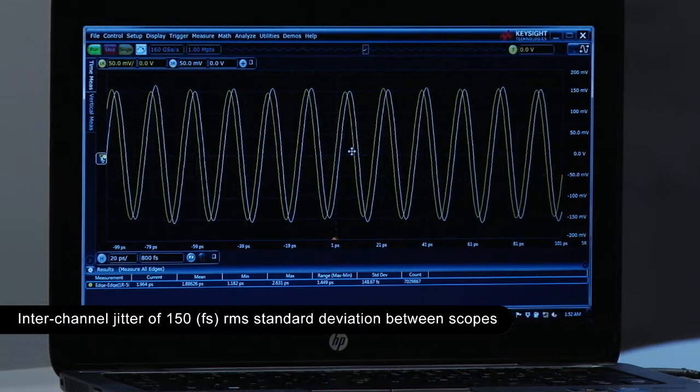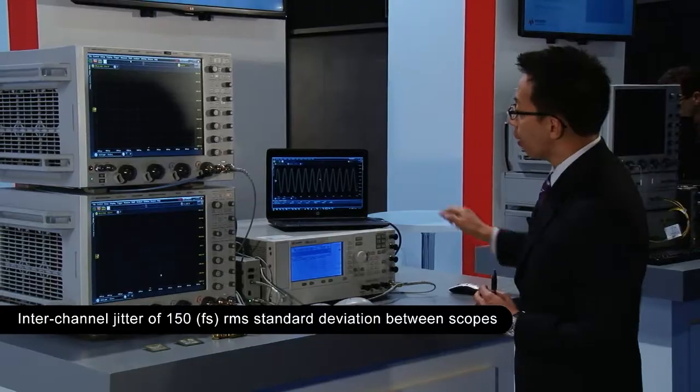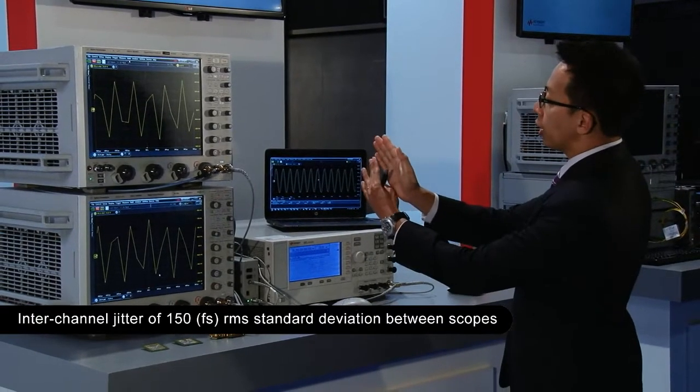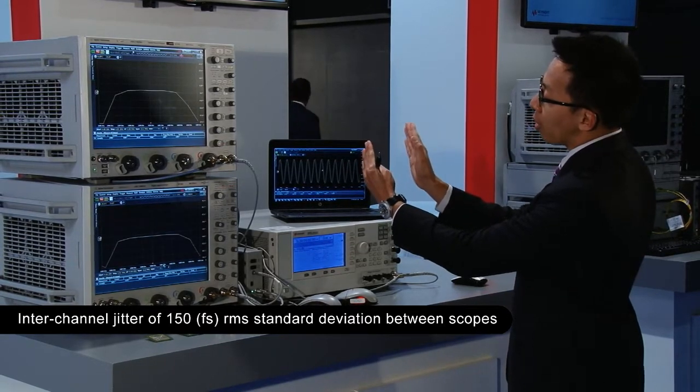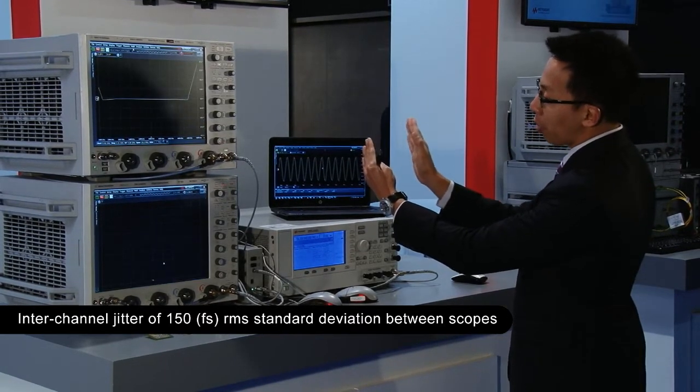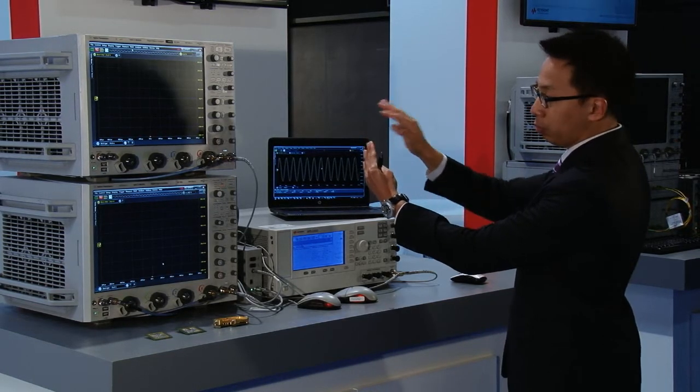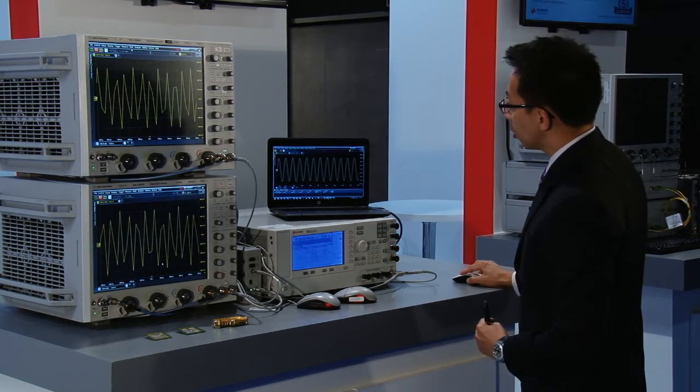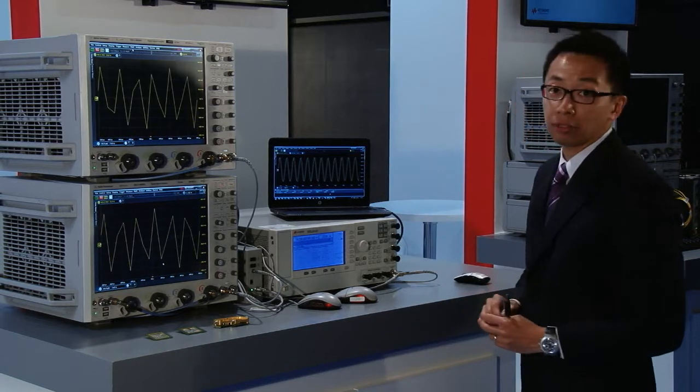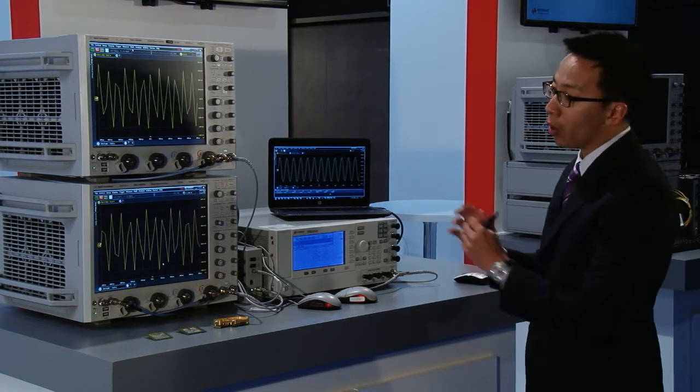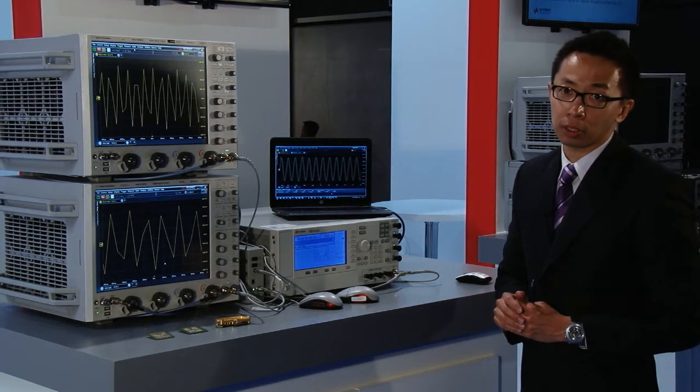The next thing is what we are doing is we are actually injecting a sine wave, the same, and split it into two paths. What we do is we actually intentionally skew the waveform a little bit and then we measure the jitter of the second channel relatively to the first scope. And you can see over here the standard deviation of the jitter is 146 femtoseconds.